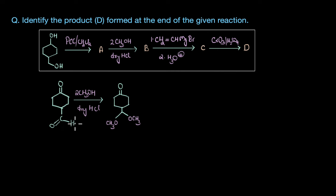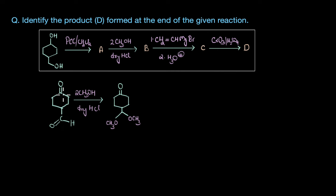In other words, we are protecting the aldehyde group so that the reaction specifically occurs at the keto group. This is because aldehydes are much more reactive than ketones, and whenever we have compounds with both of these groups and we want the reaction to happen specifically at the keto group, we have to mask the reactivity of the aldehyde group by converting it to an acetal.